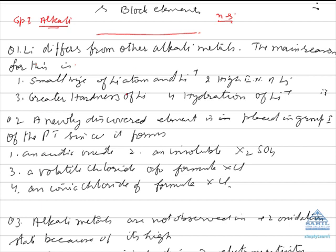The choices are: small size of lithium atom and lithium ion, high electronegativity of lithium, greater hardness of lithium, and hydration energy of lithium ions. The best answer is small size of lithium atom as well as lithium ion — because of this, its polarizing power increases and its properties differ from other alkali metals.